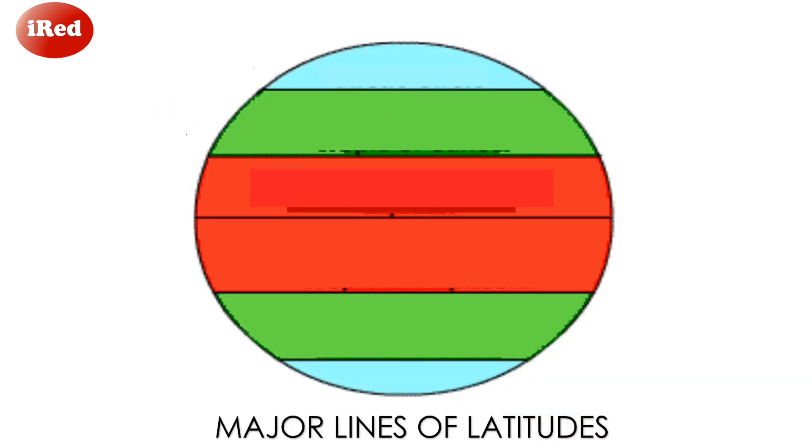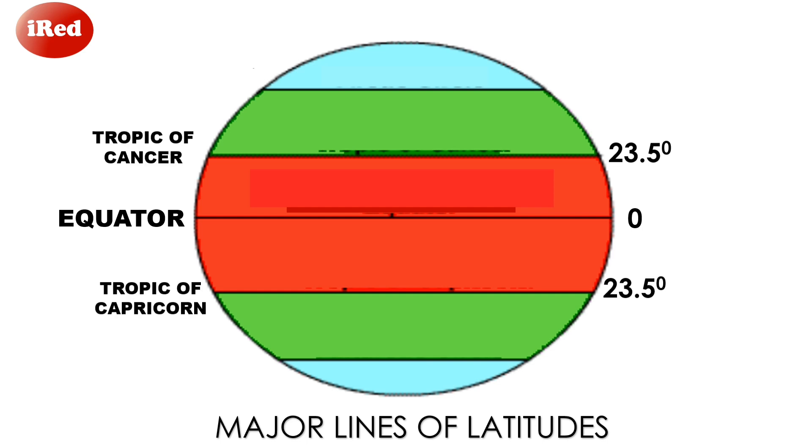The major lines of latitudes are: First is the equator, which is the line of zero-degree latitude. It divides the globe into the northern hemisphere and the southern hemisphere. Then the Tropic of Cancer, which is 23.5 degrees north. And the Tropic of Capricorn, 23.5 degrees south. And the Arctic Circle, about 66.6 degrees north. And the Antarctic Circle, 66.6 degrees south.